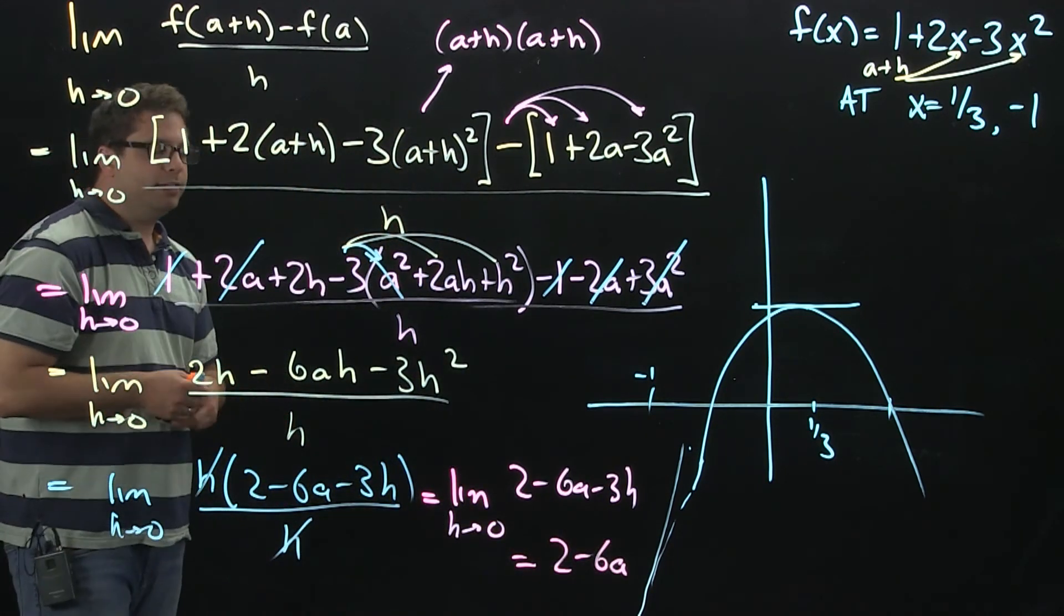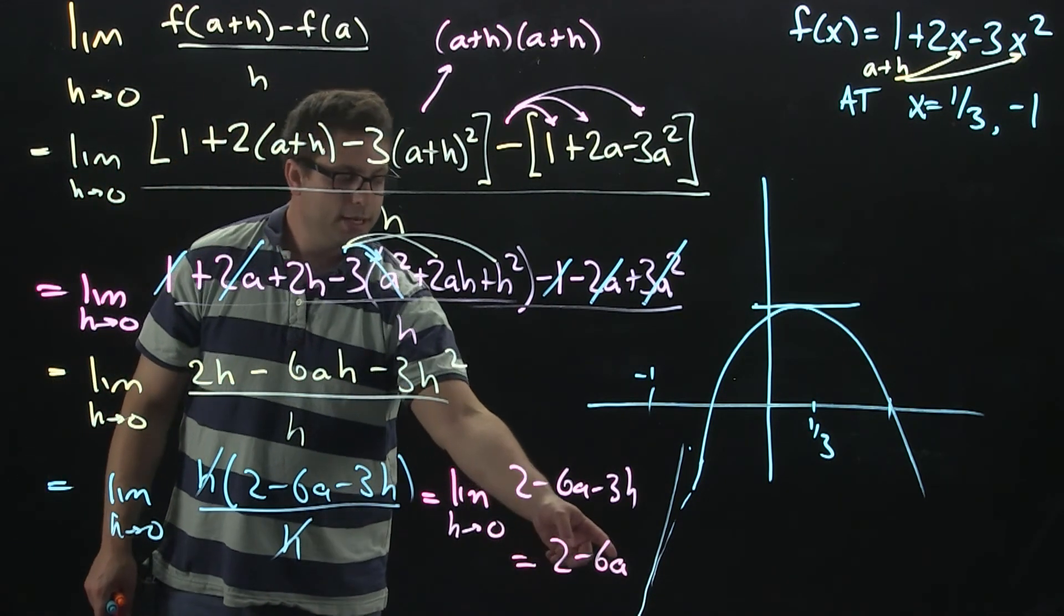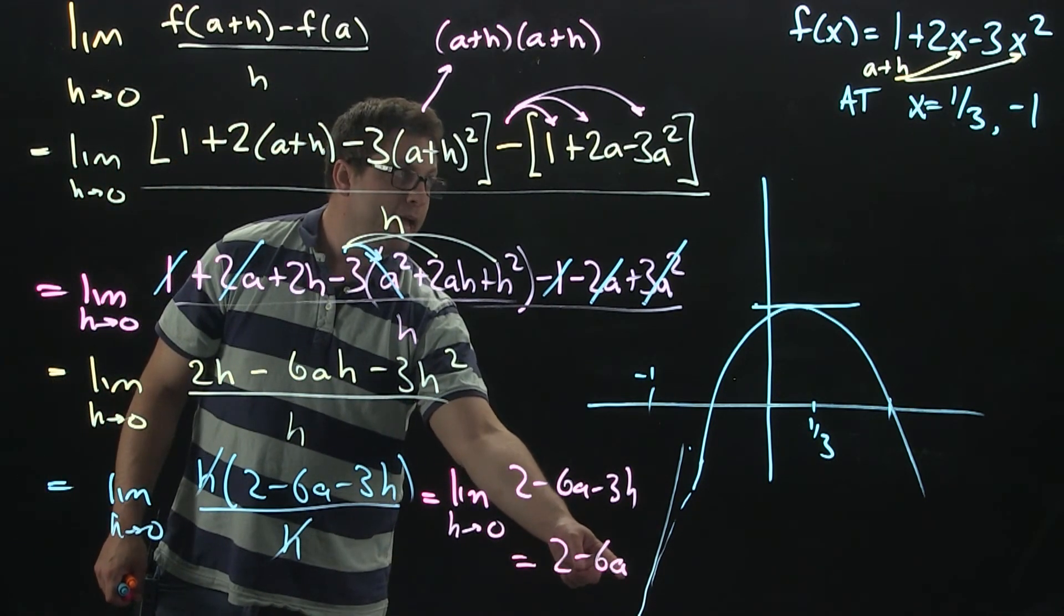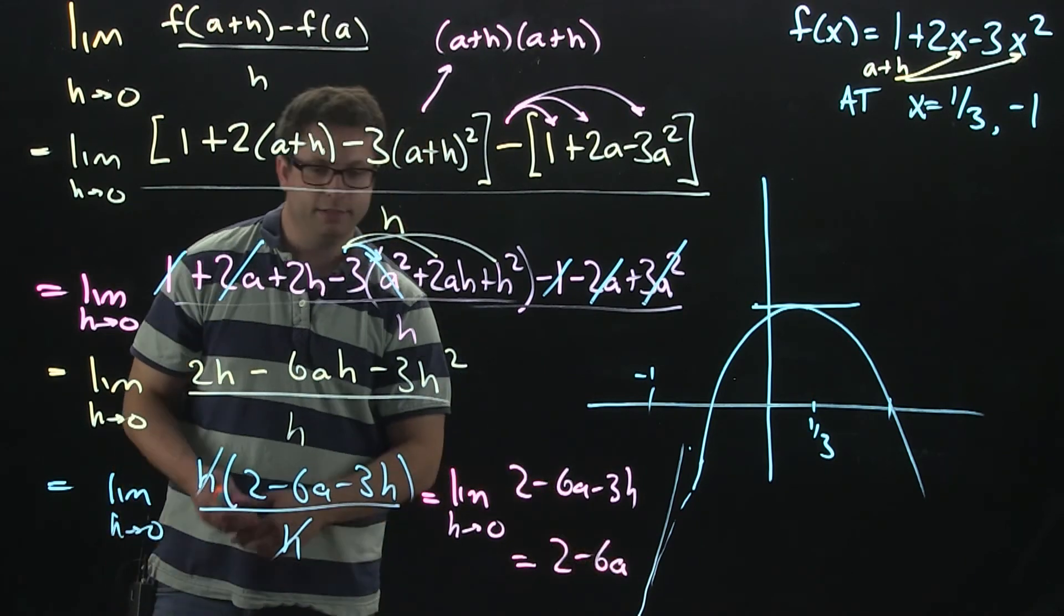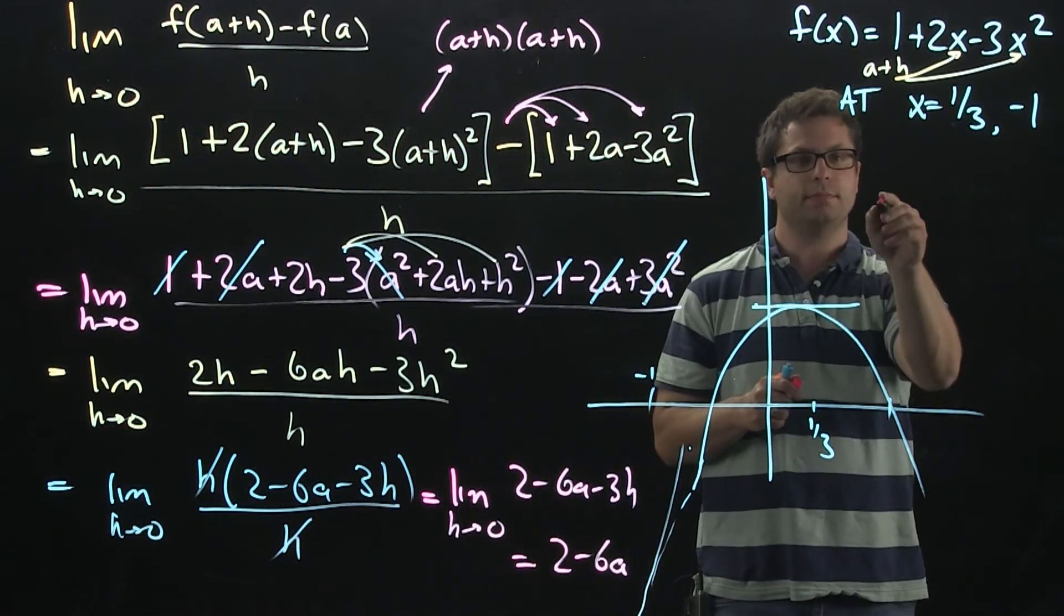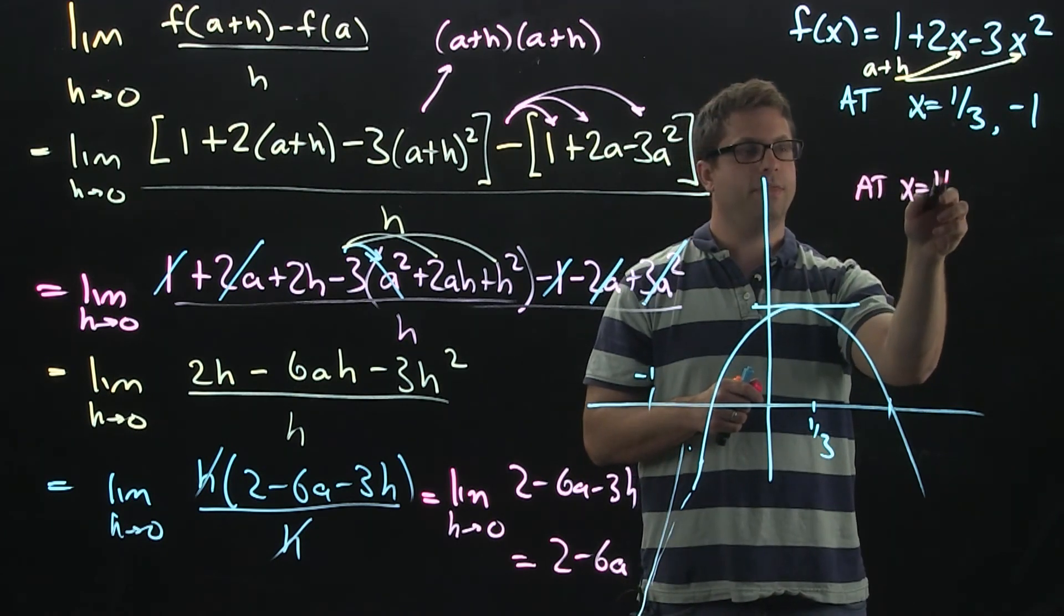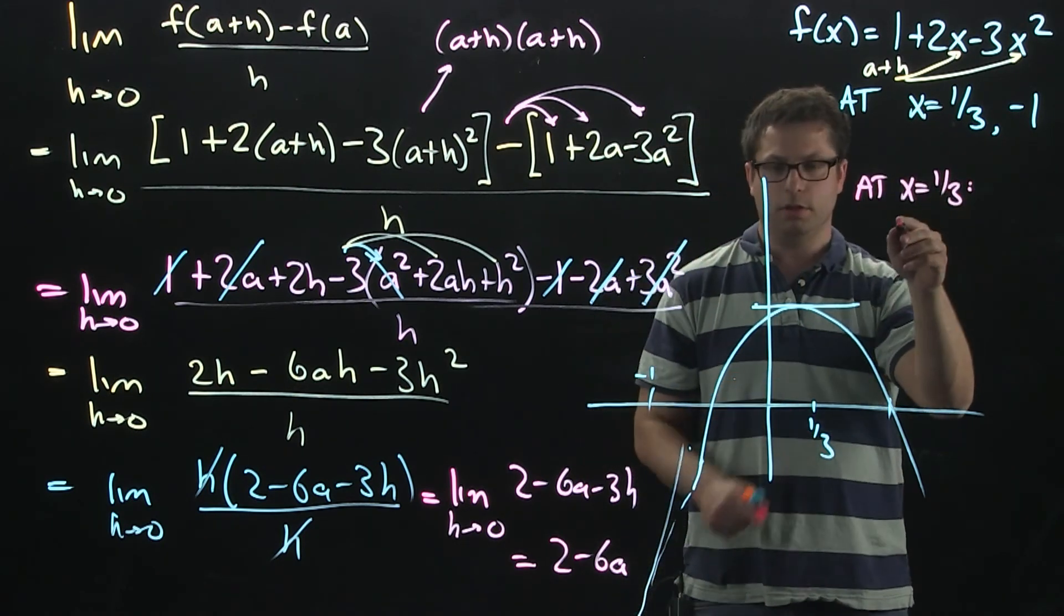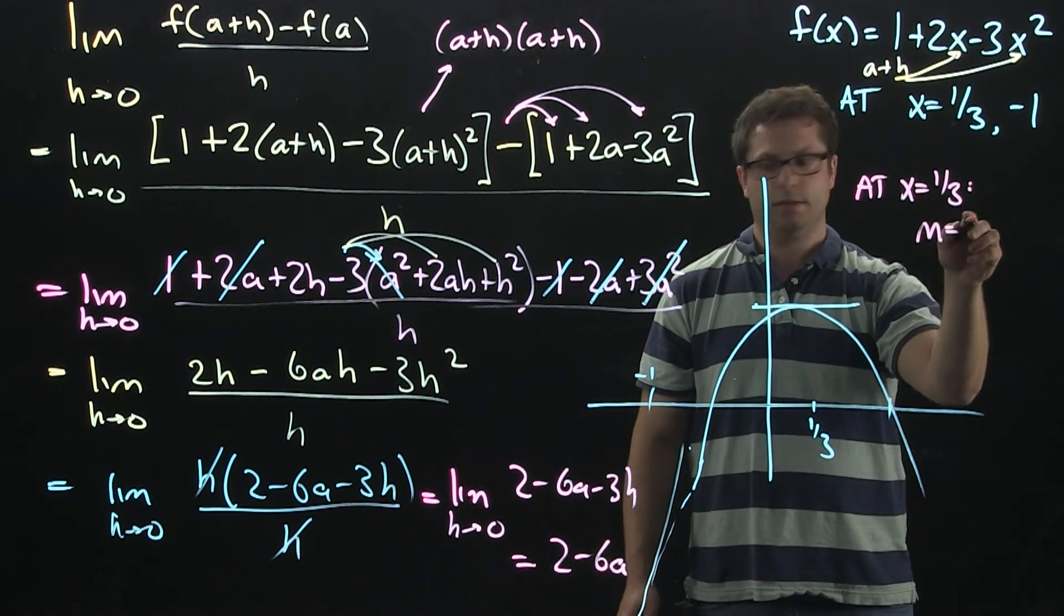That's the expression for the slopes of all the tangent lines. The a values that I have are one-third and negative 1. At one-third, the slope is going to be, what is it?